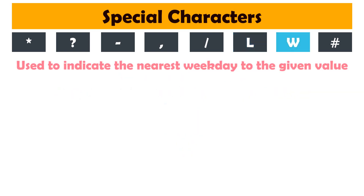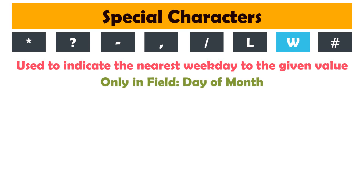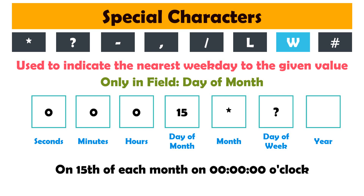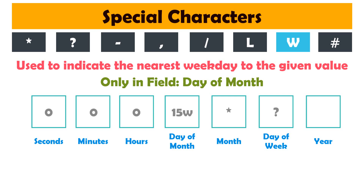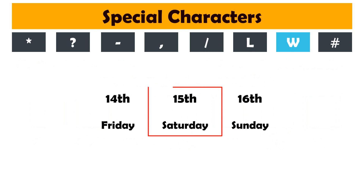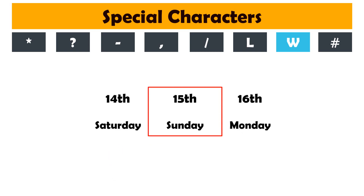W is used to indicate the nearest weekday to the given value. It may only be used with the day of the month field. For example, if we set the time with '15', the bot will always run on the 15th of the month. But if we put '15W', then if the 15th is a Saturday, the bot will be started on the 14th (Friday). If the 15th is a Sunday, the bot will start on the 16th (Monday).